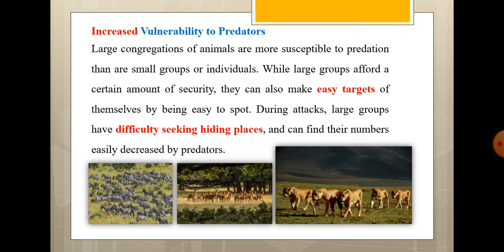During attacks, you can see the pride of lions — strong predators. Large groups have difficulty seeking hiding places. If there is a big group, all animals can be found at their place of hiding, and because of the crowd they cannot run fast. Therefore predators will easily attack them and the group's numbers can be easily decreased.